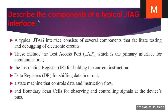Describe the components of a typical JTAG interface. The typical JTAG interface contains several components that facilitate the testing and debugging of electronic circuits. These include: the Test Access Port (TAP), which is the primary interface for communication; the TAP controller; the instruction register, which holds the current instructions; the data register, which shifts data in or out; a state machine that controls the data and instruction flow; and boundary scan cells for observing and controlling the device pins.